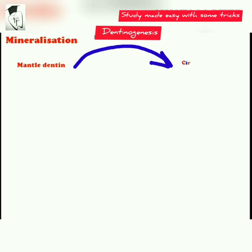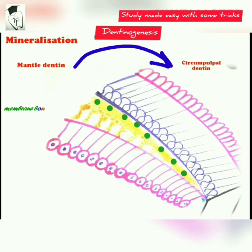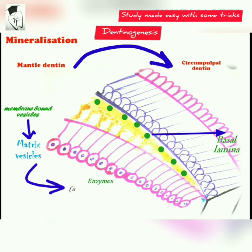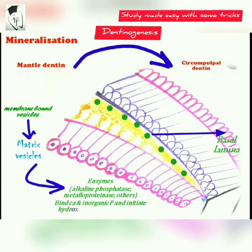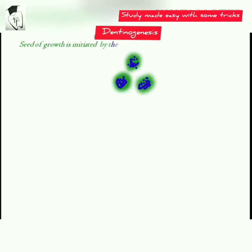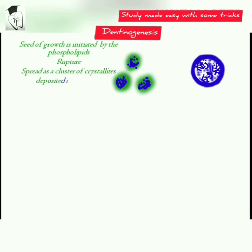Mineralization starts from the mantle dentine and proceeds towards the circumpulpal dentine. When the odontoblast secretes the mantle dentine matrix, it buds off membrane-bound vesicles called matrix vesicles, which come to lie superficially near the basal lamina. These contain phospholipids and enzymes like alkaline phosphatase and metalloproteinases. They bind calcium and inorganic phosphate to initiate hydroxyapatite crystal growth. The seed of growth is initiated by phospholipids within the vesicles; they rupture and spread as a cluster of crystallites, which then fuse with adjacent crystals and mineralize the matrix.